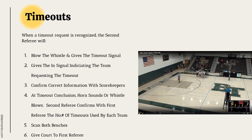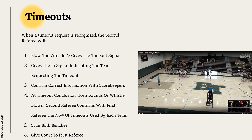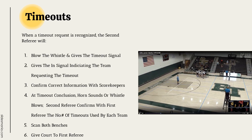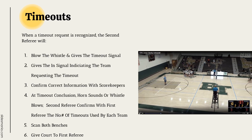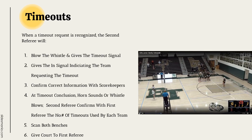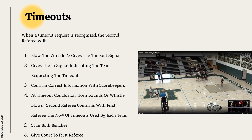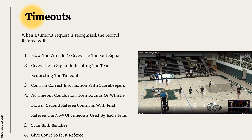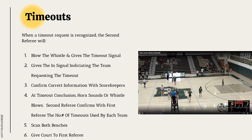Demonstrating the timeout process: recognize a timeout request by the team on the left, blow the whistle and give the timeout signal, give the end signal indicating the requesting team, give the number of timeouts used by both teams, confirm all information with scorekeepers including timeouts used, current server, next server, and libero status. At the conclusion of the timeout, the horn sounds or whistle blows, confirm with the first referee the number of timeouts used by both teams, scan both benches for any potential substitution requests, and give the court back to the first referee.